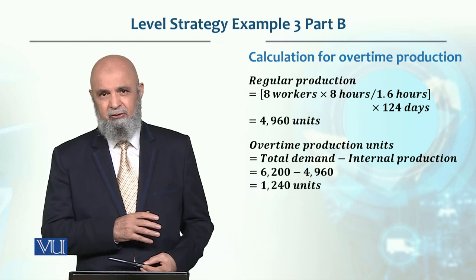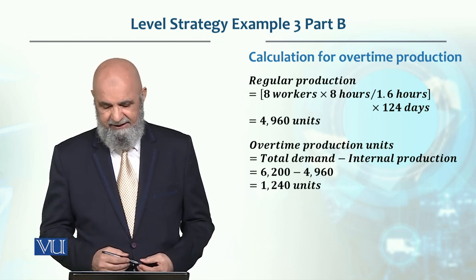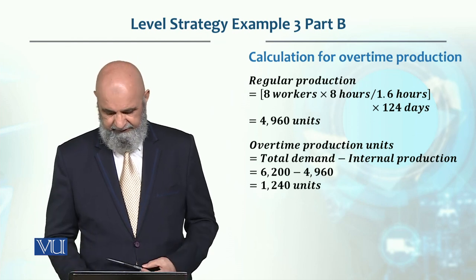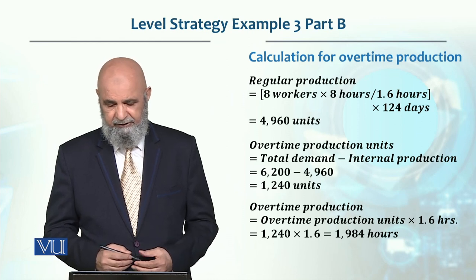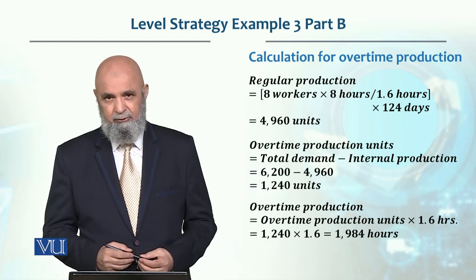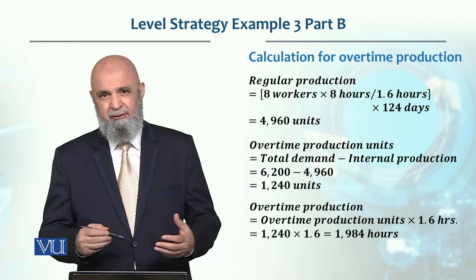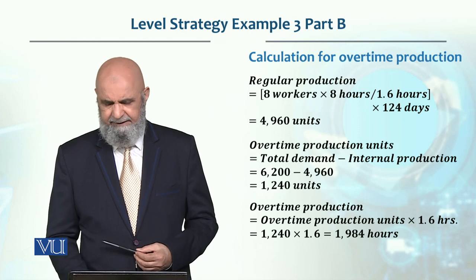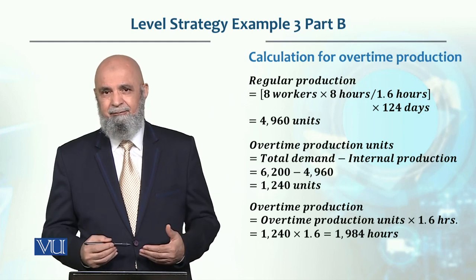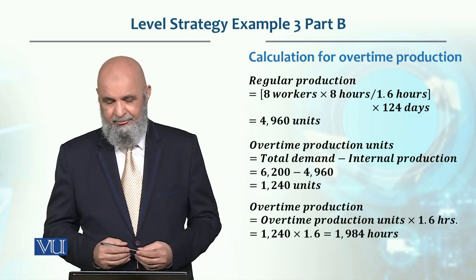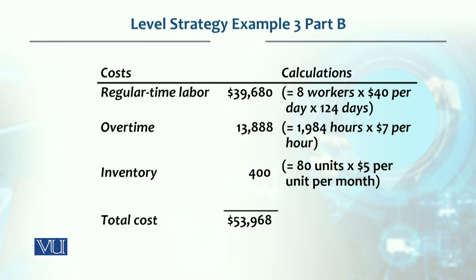Total demand is 6,200 units. Subtracting in-house production of 4,960, we get 1,240 units to be produced via overtime. Converting to hours: 1,240 × 1.6 = 1,984 overtime hours. Since overtime costs $7 per hour, the total overtime cost is 1,984 × $7 = $13,888.